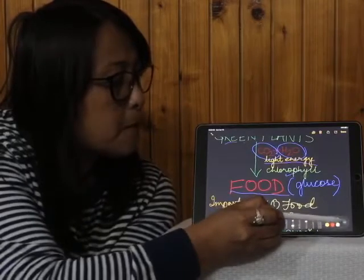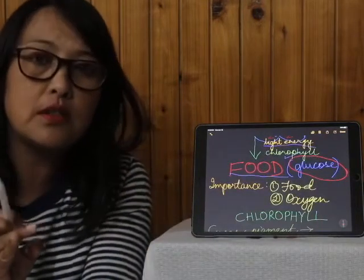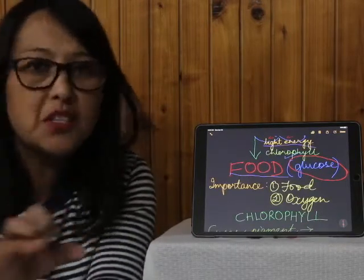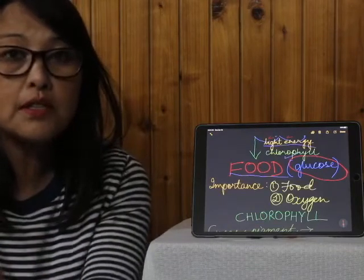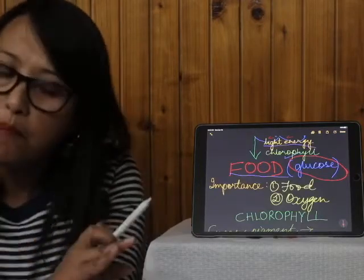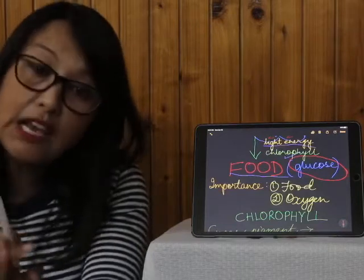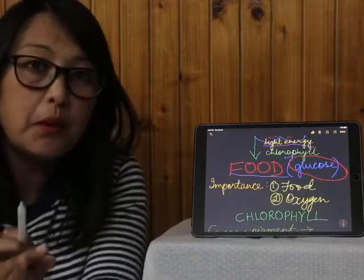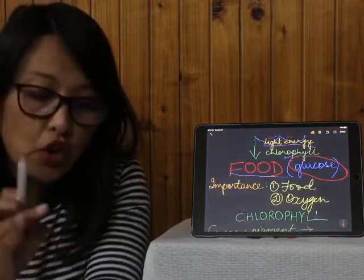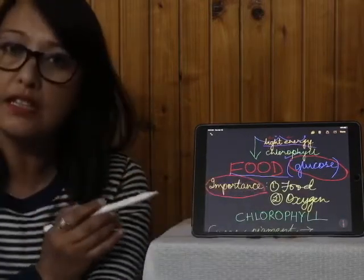That food is in the form of glucose. Plants are known as producers because they produce their own food. All organisms need food to survive, so plants make their own food. Animals and human beings obtain their food directly or indirectly from plants. To define photosynthesis: it is a process by which living plant cells containing chlorophyll prepare their own food with carbon dioxide and water in the presence of sunlight.